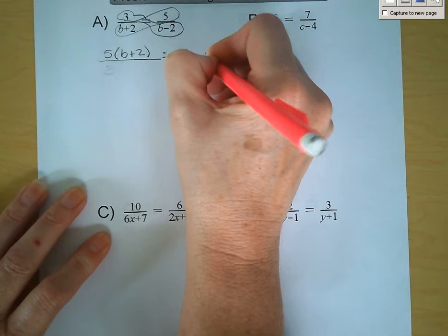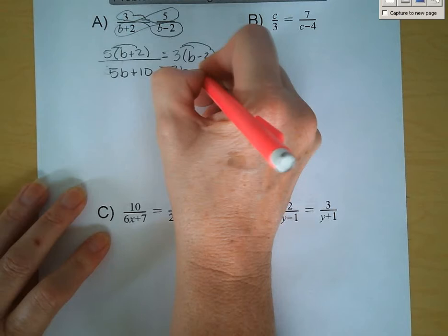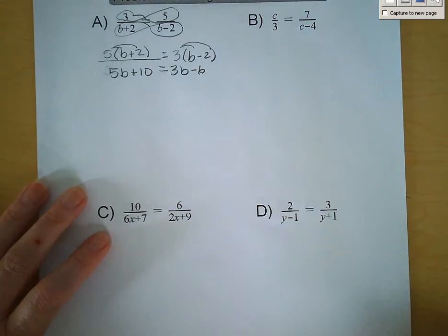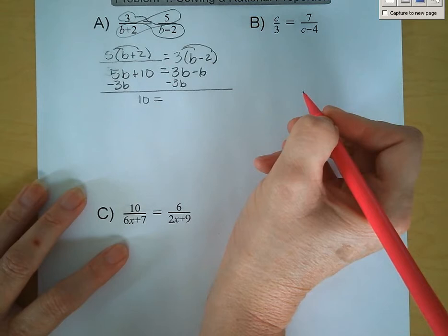Now we need to use the distributive property. We've got 5b plus 10 is equal to 3b minus 6. Adding 10 to both sides, and getting our variables all on one side by subtracting 3b from both, we get 2b plus 10 is equal to negative 6.